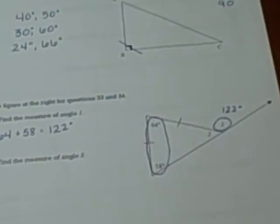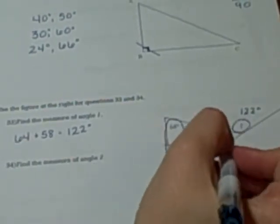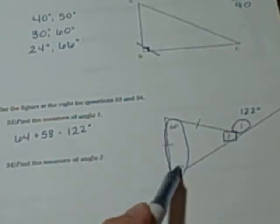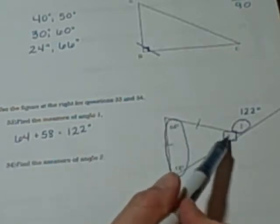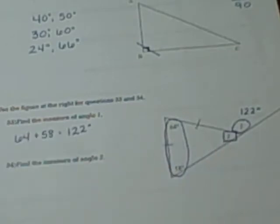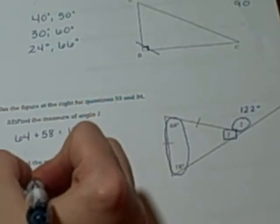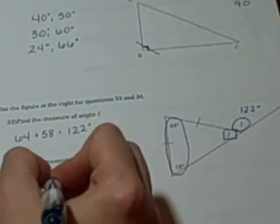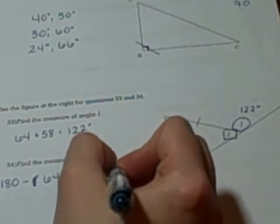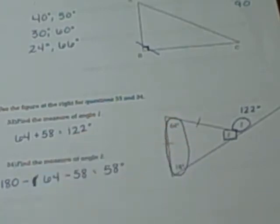Now I have three different ways to find angle 2, which is this angle here, the other angle from the triangle. Probably the one you're most comfortable with is knowing that these three angles have to add up to 180 degrees. So one way I could do it is by doing 180 minus 64 minus 58, and you should come out with 58 degrees.